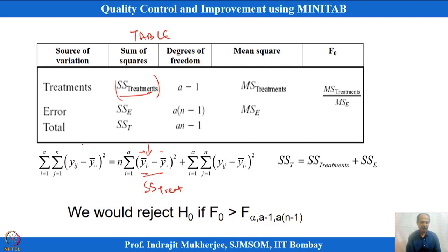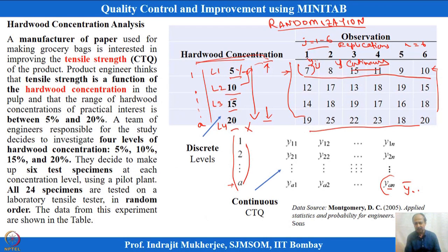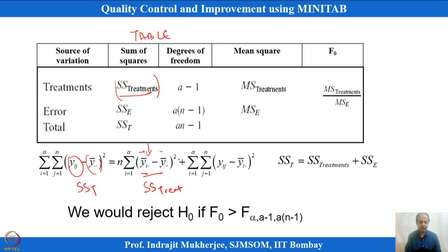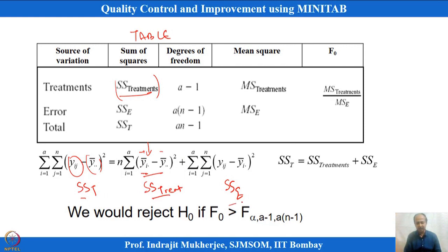SS total is the overall variation — each individual observation y_ij minus the grand average, squared and summed. SS error represents variation due to other unknown factors, calculated as SS total minus SS treatment. This residual error (individual observation minus label average) is also known as the residual.